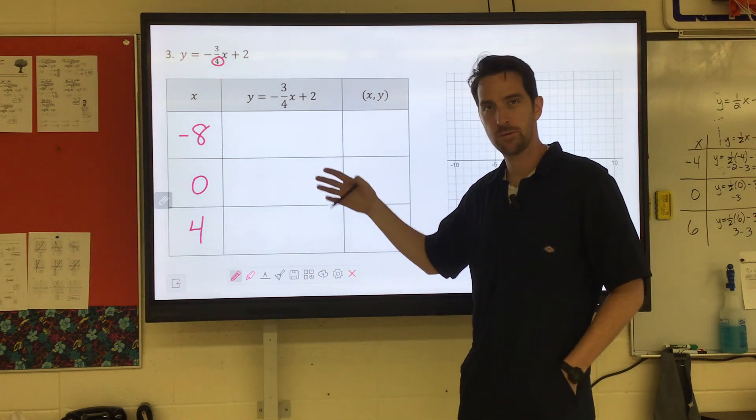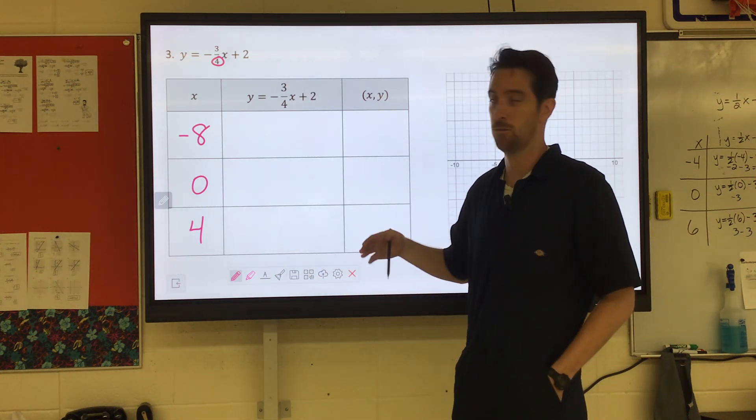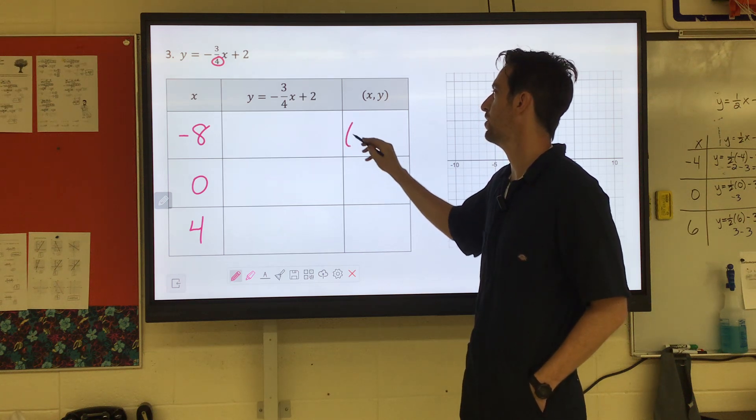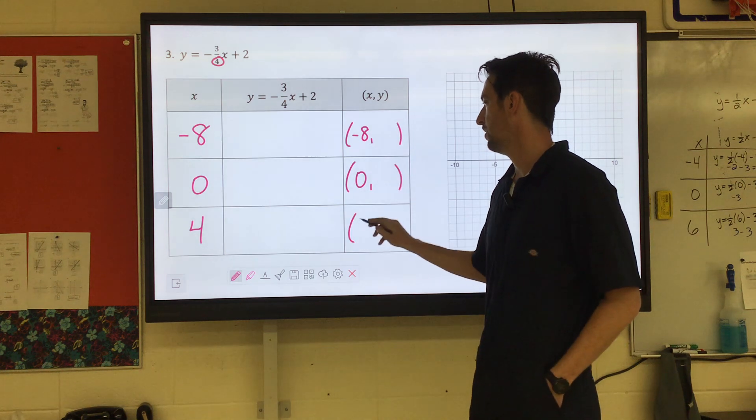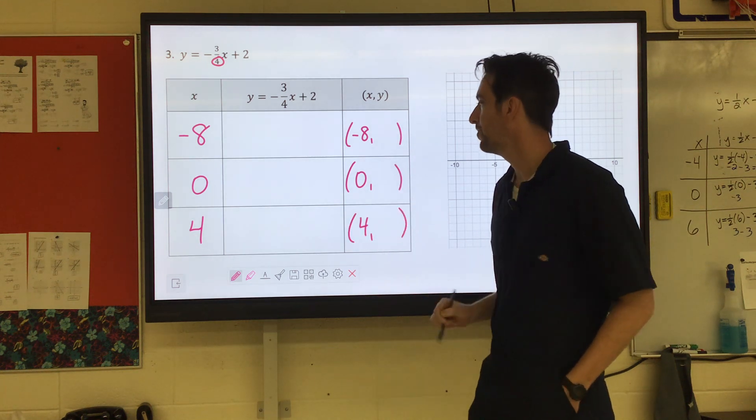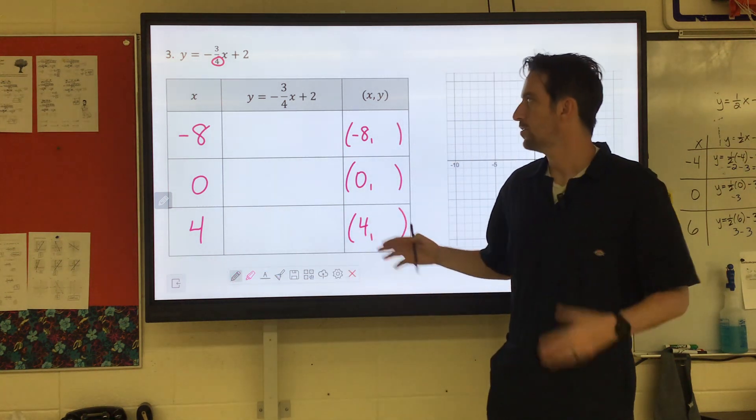These are the numbers we're going to substitute in for x. We're going to solve the equation and then the answer will give us our y. So we have half the coordinate already: negative eight something, zero something, and four something. So we'll go ahead and substitute these in.